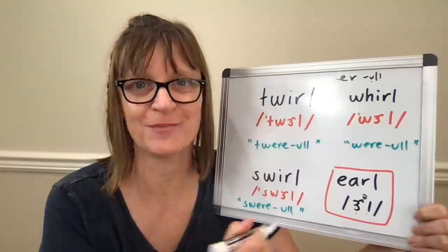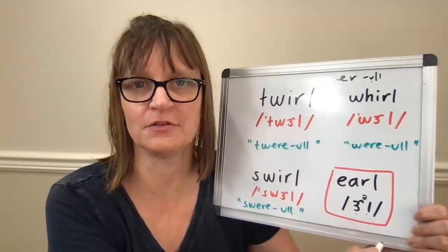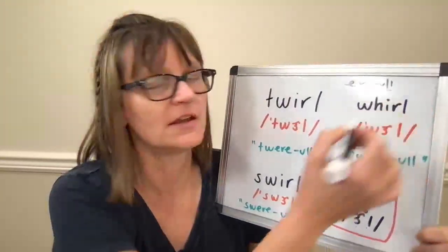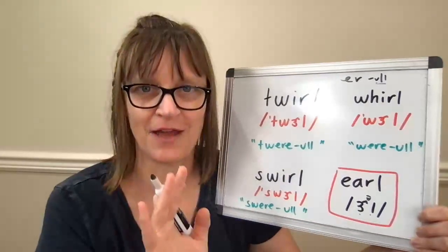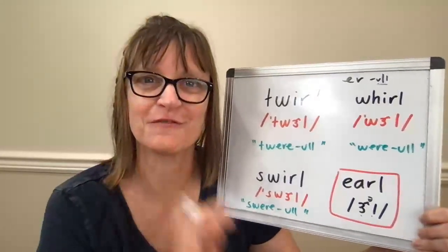So you don't really want to make a distinct break between your ur and ul, you just want to make that dark L with the tongue in the schwa position, and the back of the tongue in the schwa position, the front of the tongue lifted.